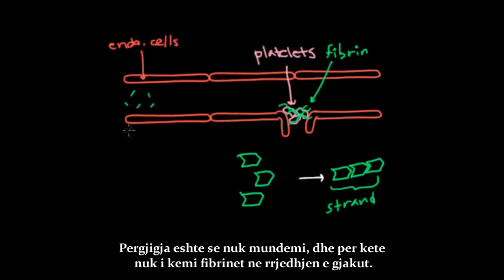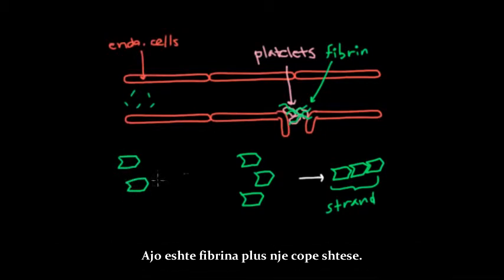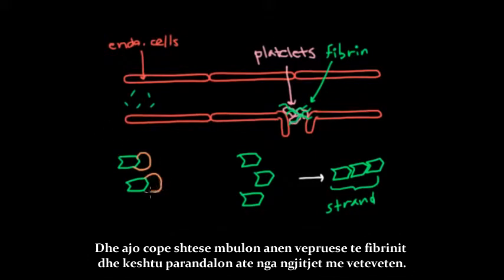And the answer is that you can't, which is why you don't have fibrin circulating in your blood. You actually have something else, and that's something else is fibrin but plus an extra piece. And that extra piece, as you can see, covers one of the active sites of the fibrin and therefore prevents it from joining to itself.